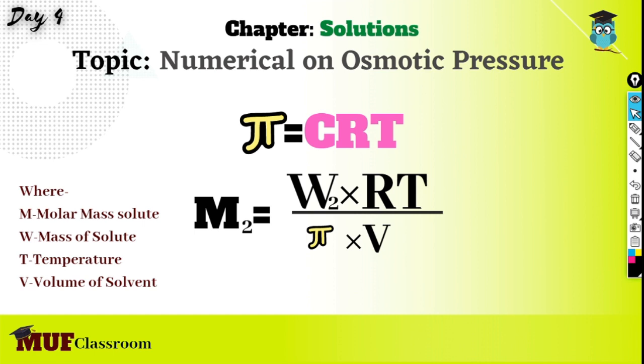The colligative properties - that is osmotic pressure, relative lowering of vapor pressure, elevation in boiling point, and depression in freezing point - are the most probable questions from solutions.